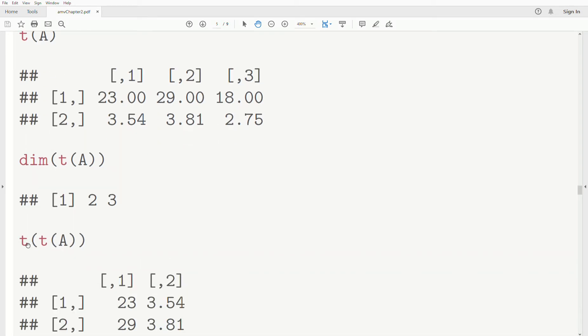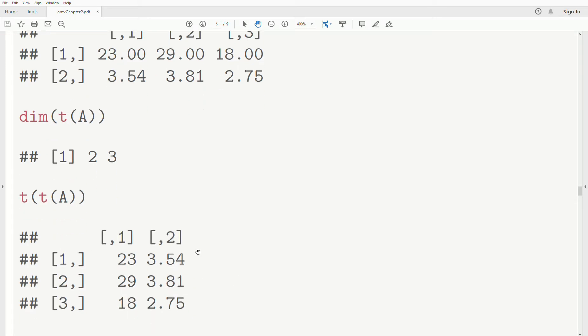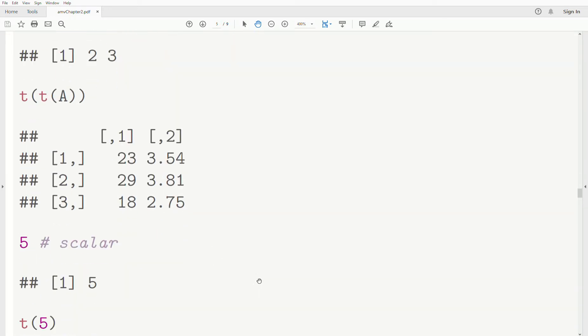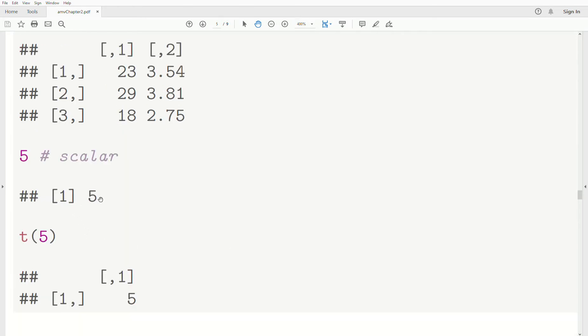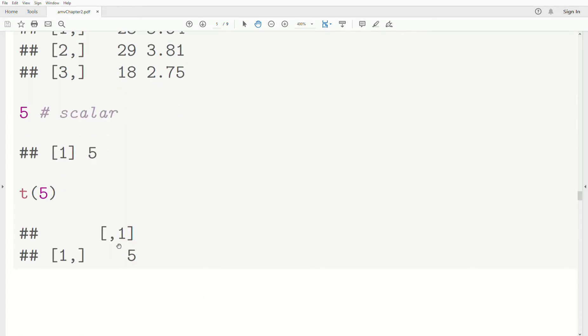The transpose of A transpose is the original matrix back, right? If we have a scalar 5 and then we take the transpose of 5, we just get 5 back.